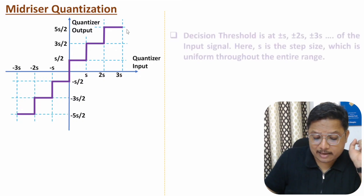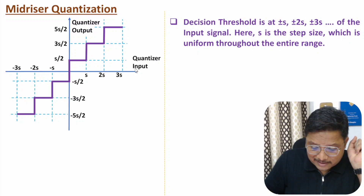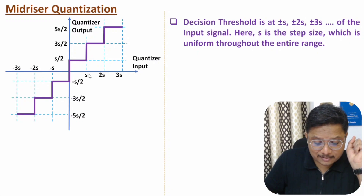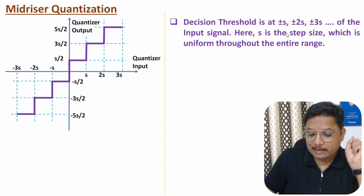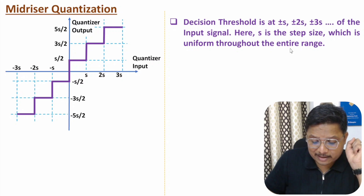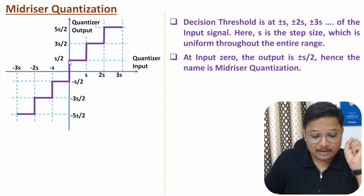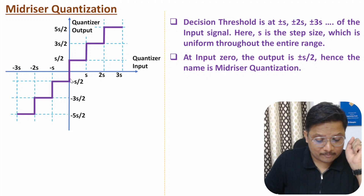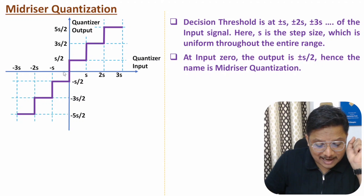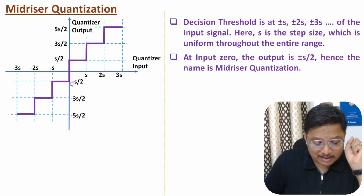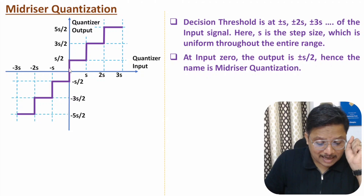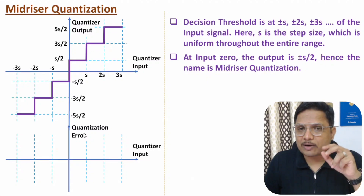Key points of mid-riser: decision thresholds are at plus or minus s, plus or minus 2s, plus or minus 3s, where s is the step size, uniform throughout the entire range. If you have input zero, the output is plus or minus s/2 — the output is rising at zero. If output is s/2, quantizer input is slightly greater than zero; if output is minus s/2, quantizer input is slightly less than zero. That's why the name is mid-riser.